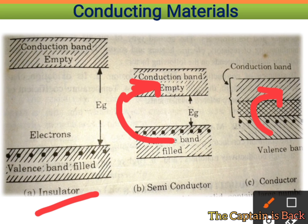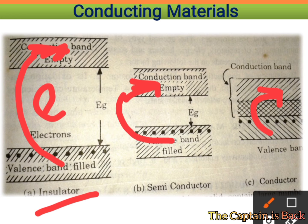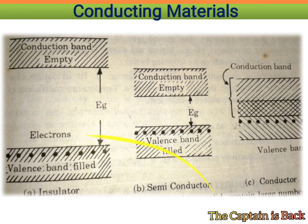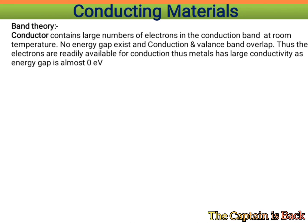For insulators, the energy gap is large — around 6 electron volts. Electrons find it very difficult to jump to the conduction band. Even if you increase the temperature or voltage, practically no conduction takes place, just like plastic — you can melt it, but no conduction occurs.